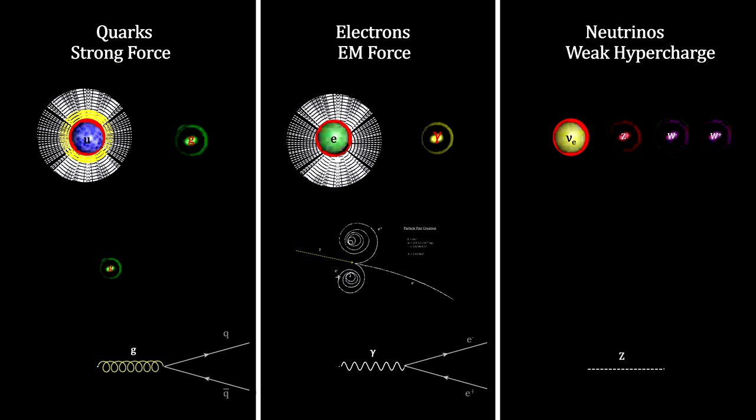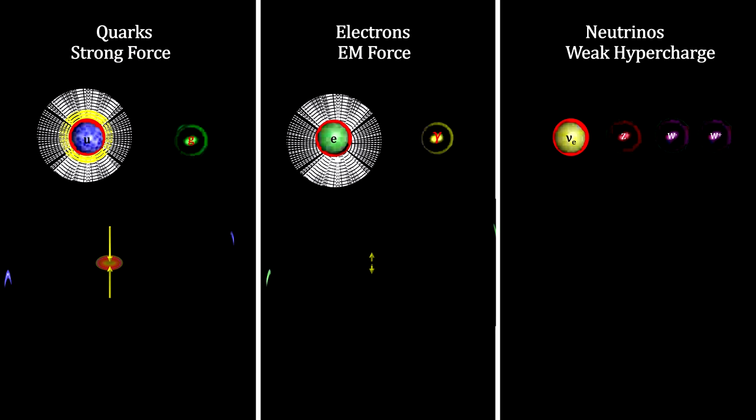Just like the photons and gluons can create matter-antimatter particle pairs, the w- and z-bosons can create matter-antimatter particle pairs. And like interacting electrons and quarks disturb their respective force fields, creating virtual photons and gluons that exerts the force of their fields, interacting particles carrying the weak hypercharge disturb the weak hypercharge field, creating virtual w- and z-bosons that exert the force of the field.